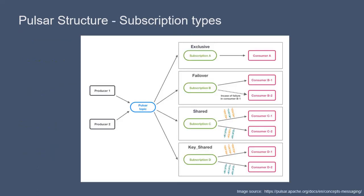Let's review the subscription types using this figure as a guide. We have data coming in from the producers into a Pulsar topic, and then you have one or more consumers subscribed to that topic.